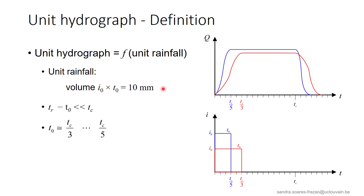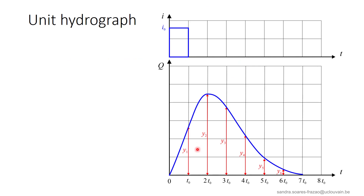To characterize a catchment, a specific hydrograph referring to a so-called unit rainfall will be defined. The duration of such a unit rainfall should be significantly shorter than the time of concentration in order for the resulting hydrograph to present a quasi-constant shape. A unit hydrograph will be presented as a series of ordinates y, corresponding to different time abscissas. Each ordinate represents the discharge at time t resulting from the unit rainfall over the catchment. The assumptions of the method imply that the response of a catchment to a given rainfall can be constructed as a linear combination based on the unit hydrograph.